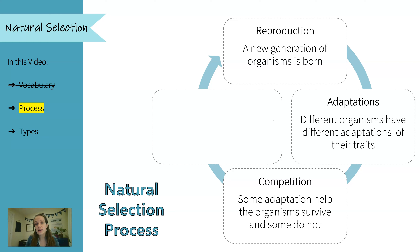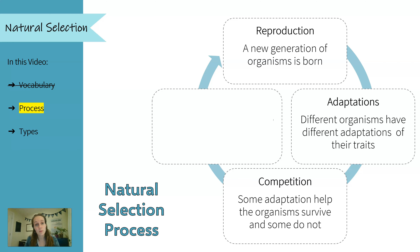So if you have longer legs, perhaps you can run farther. If you have a certain coat color, perhaps you can camouflage better. But if you have traits that help you survive, you're more likely to reproduce. And if you have traits that don't help you survive, then you are less likely to reproduce.